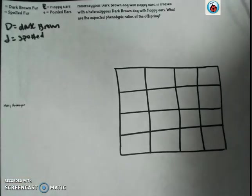Here we see a word problem for genetics dealing with two traits. We're dealing with dogs that have either dark brown fur as a dominant trait or spotted fur as a recessive trait, and floppy ears as dominant and then pointed ears as recessive.